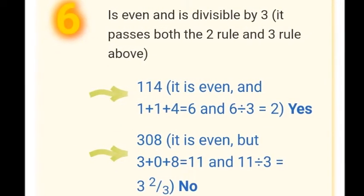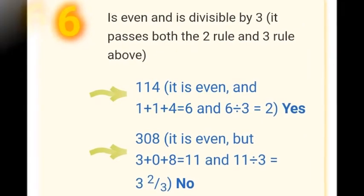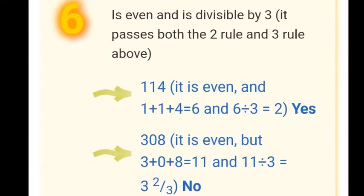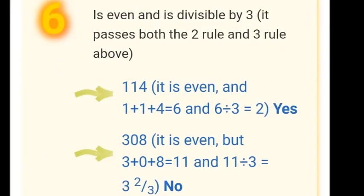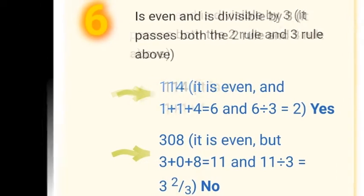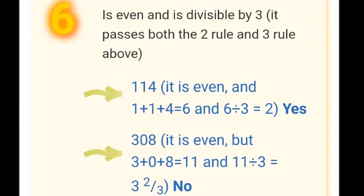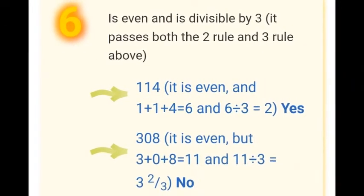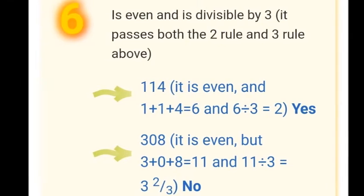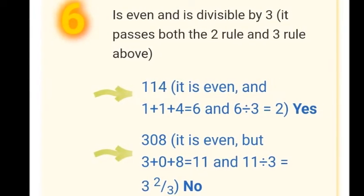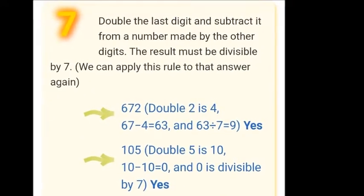Let's take the example 114. First, it is an even number. Now let's check divisibility by 3: 1 + 1 + 4 = 6, which is divisible by 3. So 114 is divisible by 6. Let's take another example, 308. Though it is even, if we check divisibility by 3: 3 + 0 + 8 = 11, and 11 is not divisible by 3. So 308 is not divisible by 6.